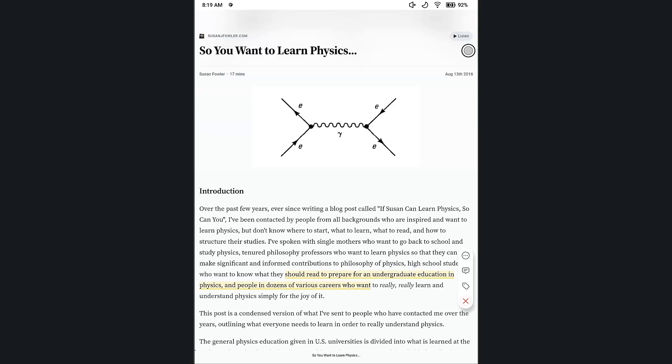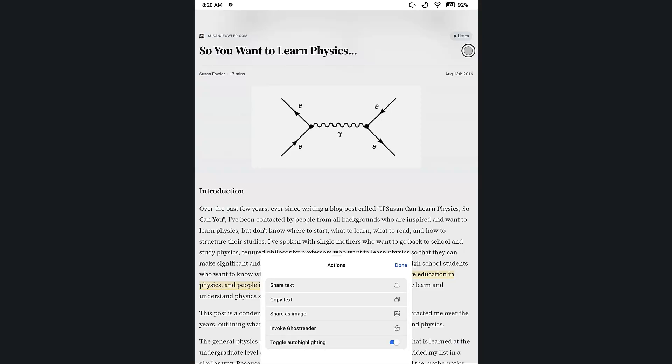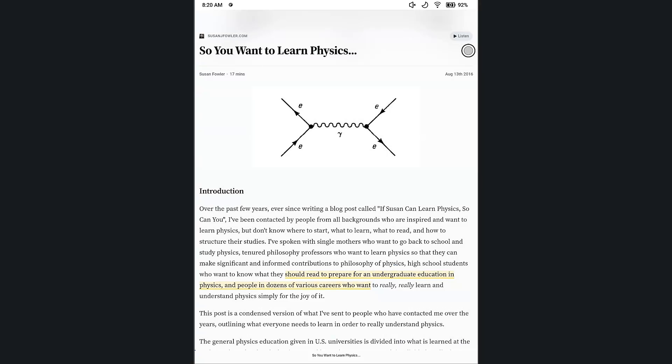And there we go. Auto highlighted and we get the normal pop-up where we can delete it, add a tag, comment, or go into the options. And if you go into the options, that will also bring up toggle auto highlighting off or on along with the others. And that's how that works.